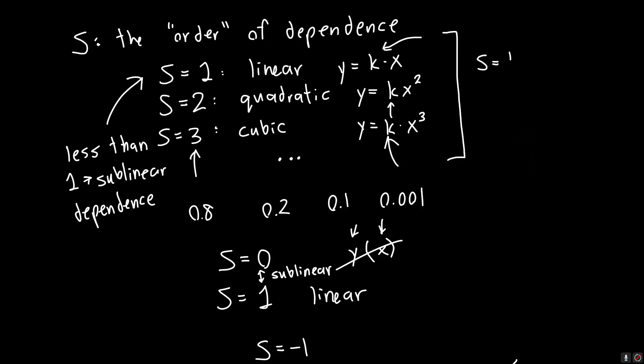One more to add: a sensitivity of one half means we've got square root dependence on x. In general, the relation y equals some coefficient k times x to the n will give us a sensitivity equal to n. Sensitivity is a great way of describing functions because we don't need to use coefficients anymore — if all we're interested in is percentage changes or ratios of changes, this works just fine. That concludes the video on sensitivity — I hope you enjoyed it, please like, comment, and subscribe, and I'll see you next time.